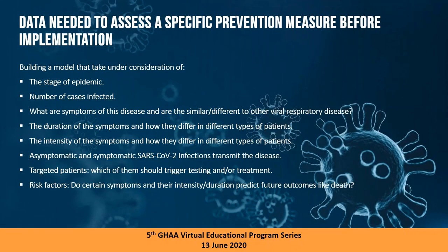To do this analysis, you need specific information in your model: the stage of the epidemic — you have to know where you are in the pandemic to react appropriately; the number of infected cases; symptoms of the disease and how they compare to other viral respiratory diseases; duration and intensity of symptoms; symptomatic versus asymptomatic transmission; targeted patients for testing or treatment; and all relevant risk factors — to predict outcomes like death or recovery.